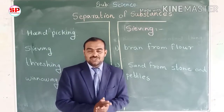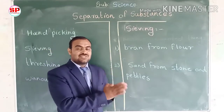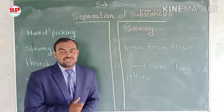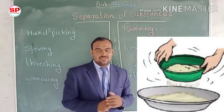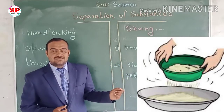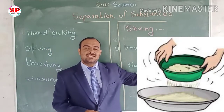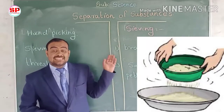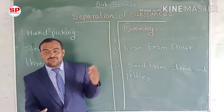All substances of various sizes are removed from the mixture — that is called sieving. For example, bran is removed from flour. Both bran and flour are made from the same substance, but because of their different sizes, we are able to remove the bran from the flour using sieving.